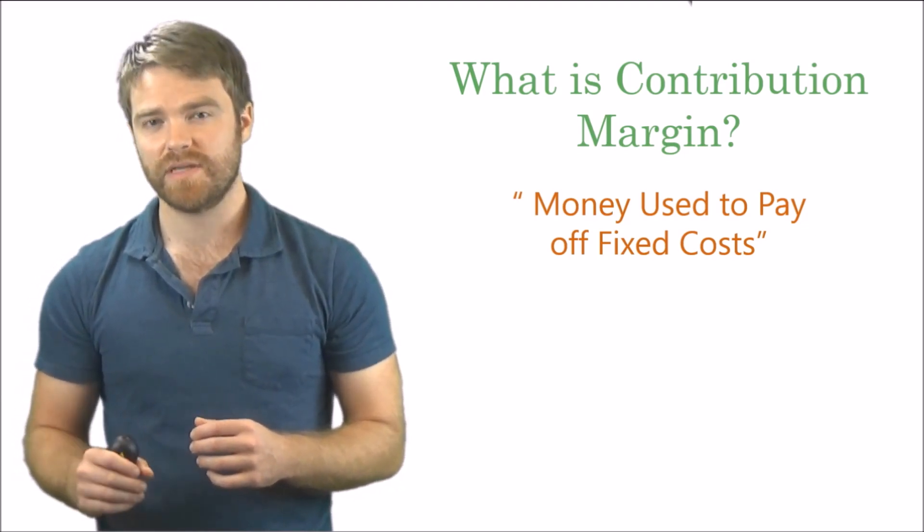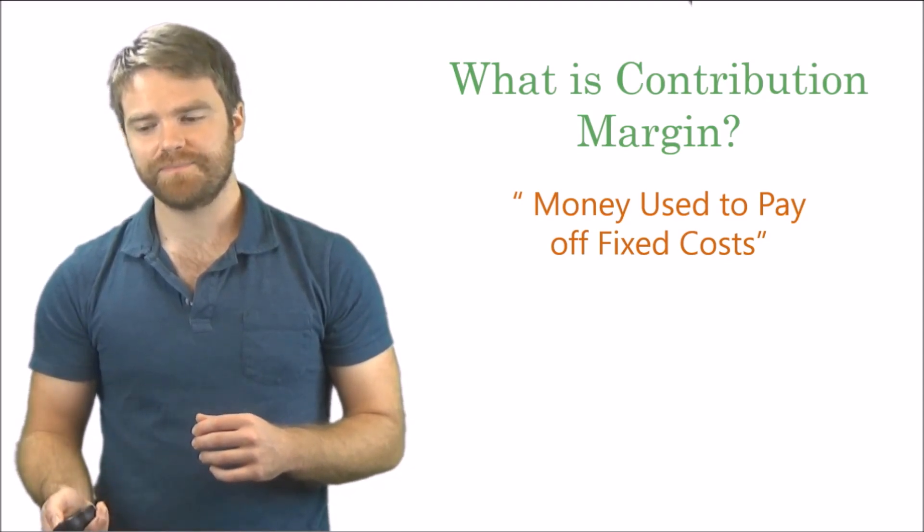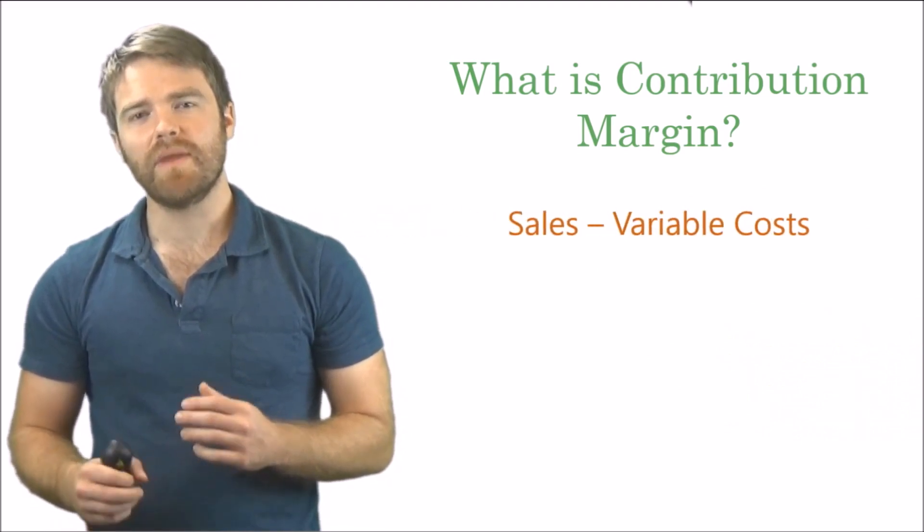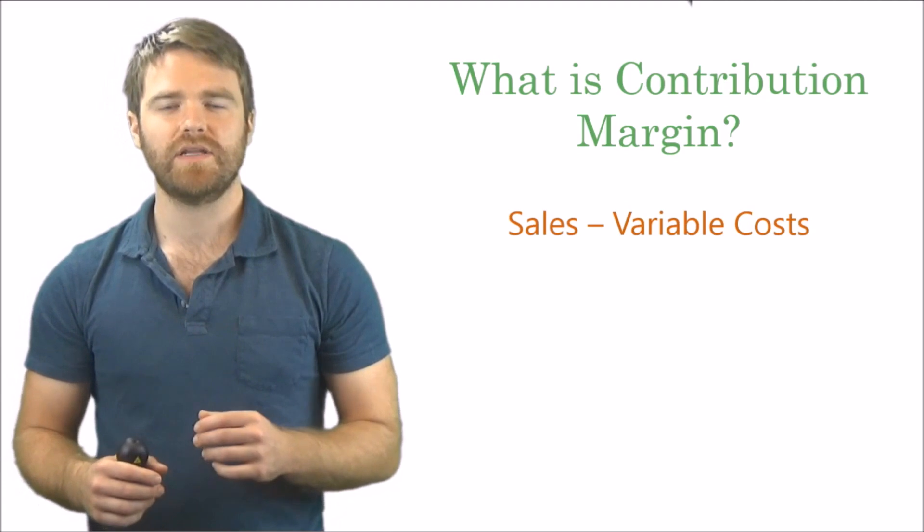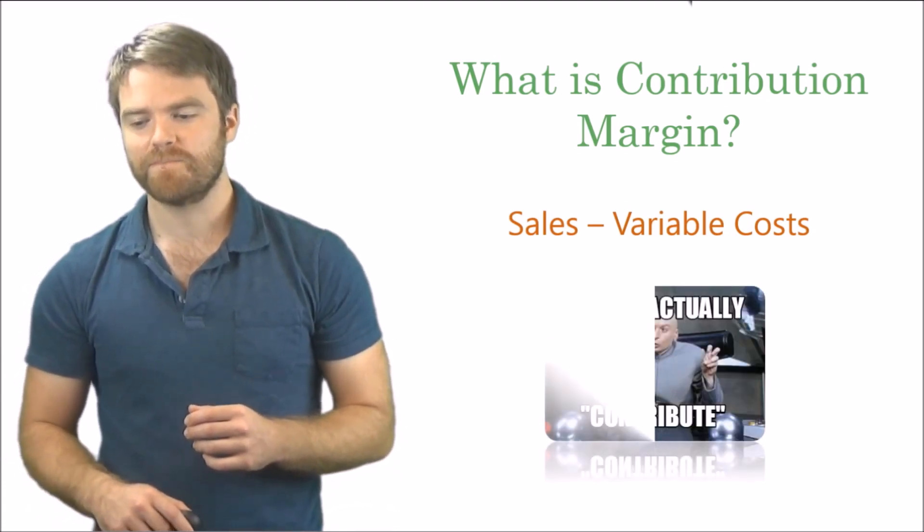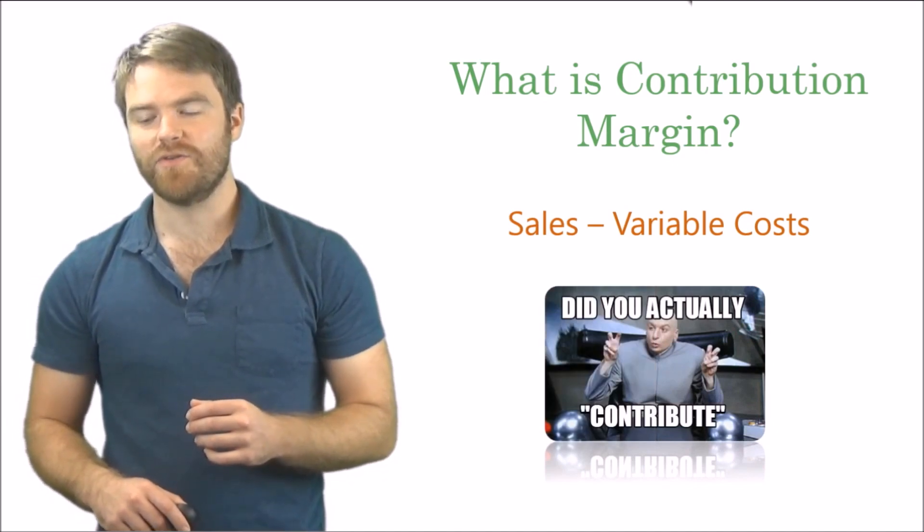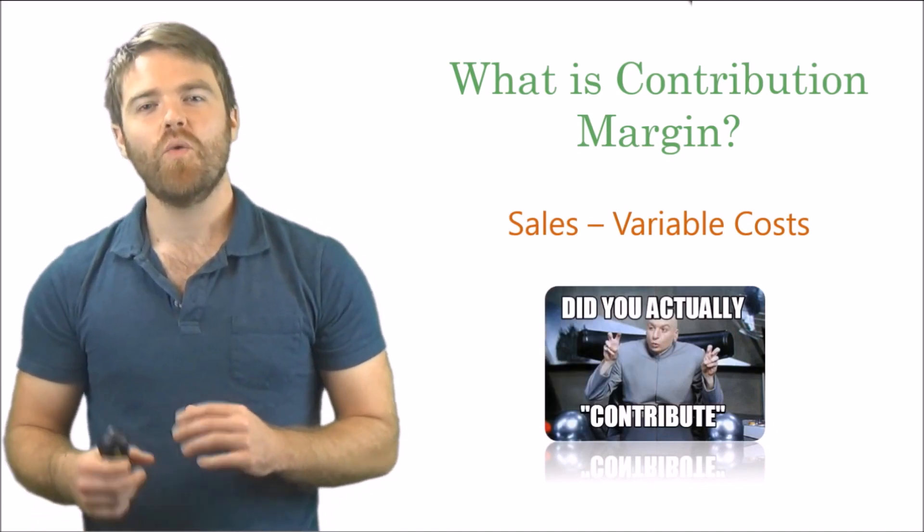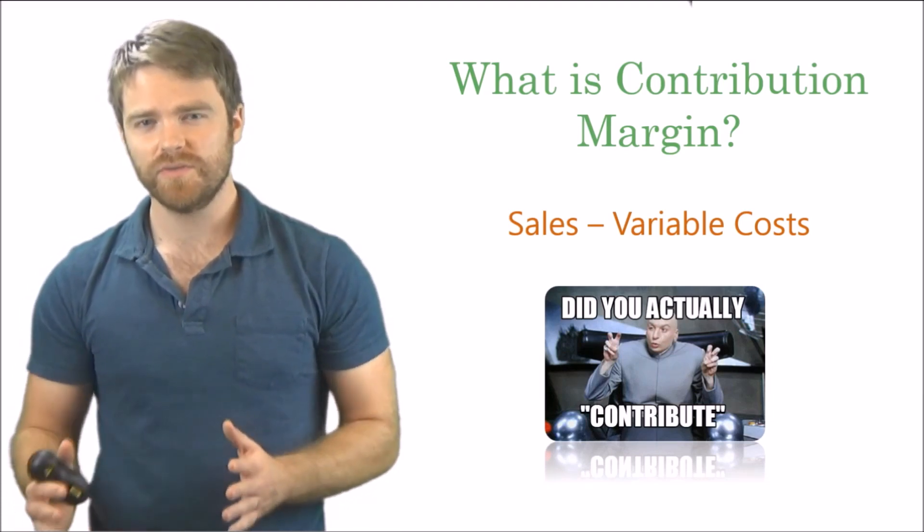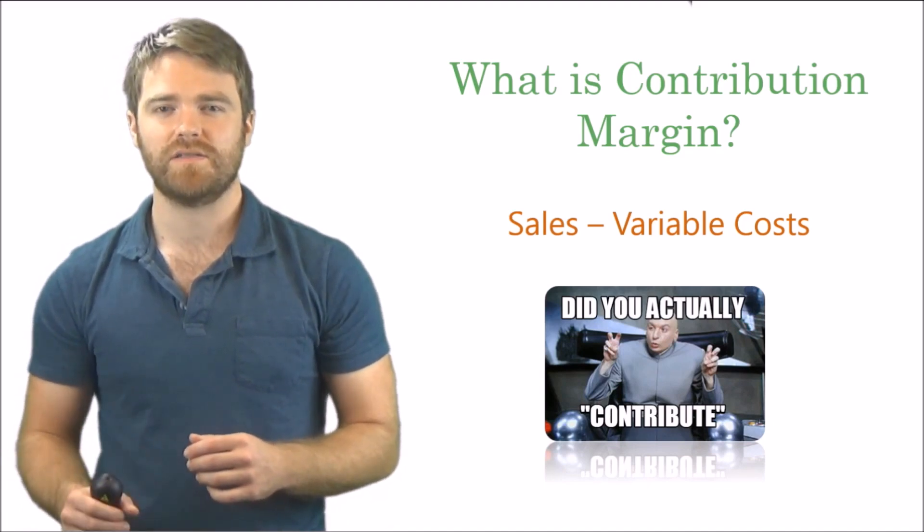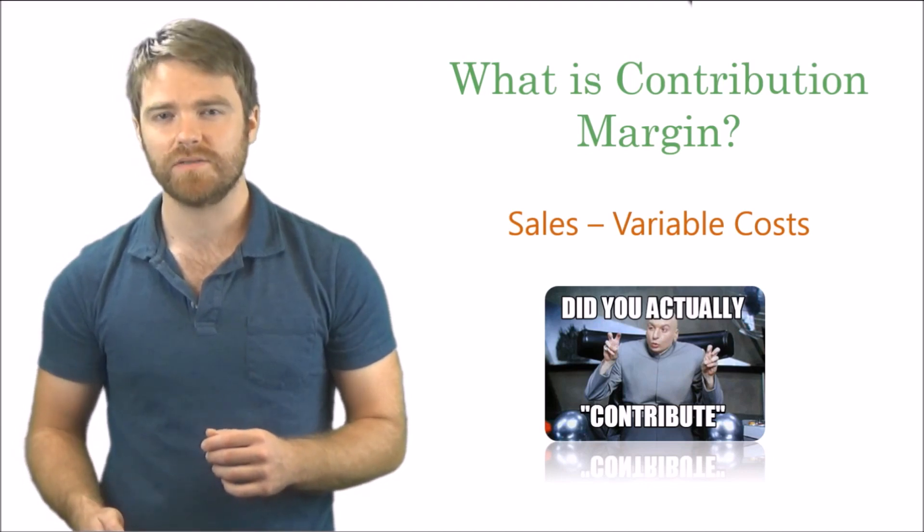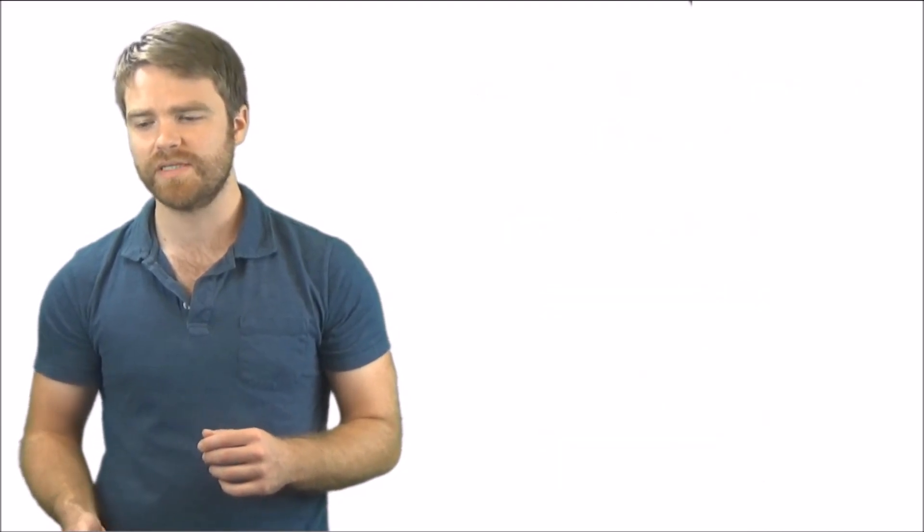Another way to look at it is this: sales minus variable costs. That's another way to look at it. There's two ways, so write both of them down. What did you actually contribute? That's the idea here. What are you contributing toward? Contribution margin contributes to paying off fixed costs, and the formula for that is sales minus variable costs.